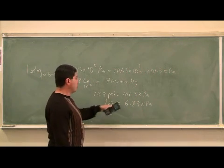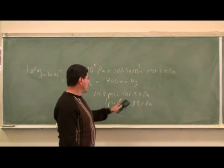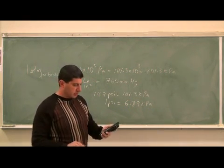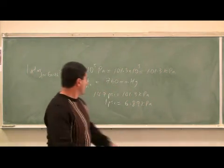So one psi, one pound per square inch, is equivalent to 6.89 kilopascals from that conversion. You can see.